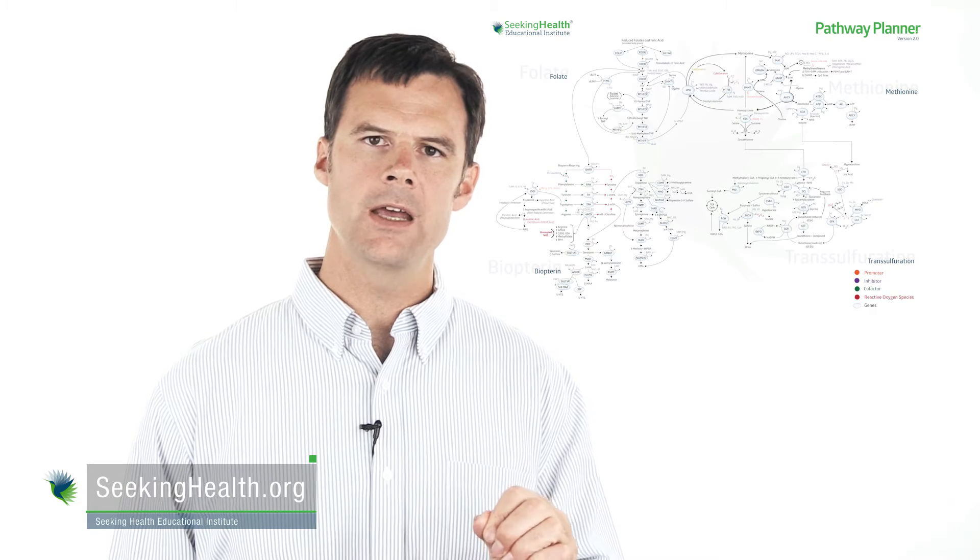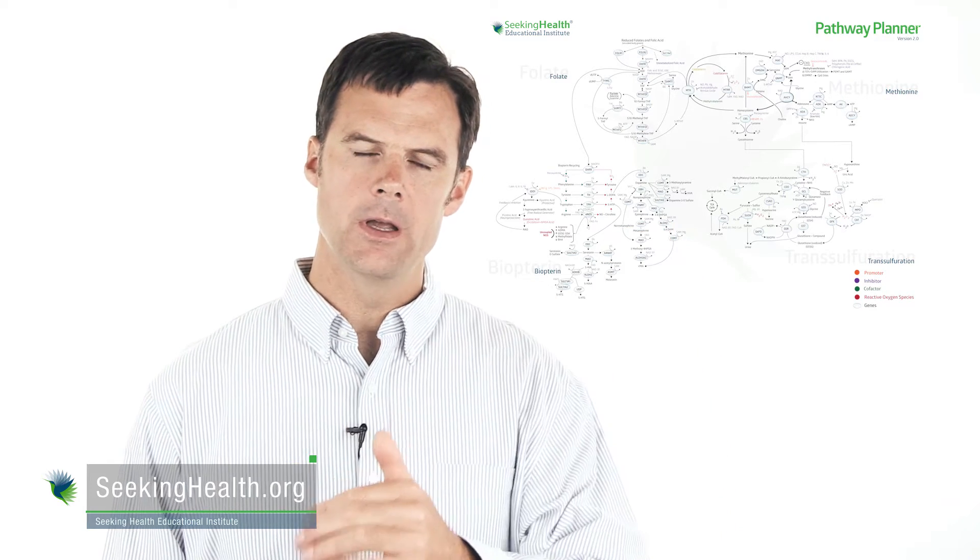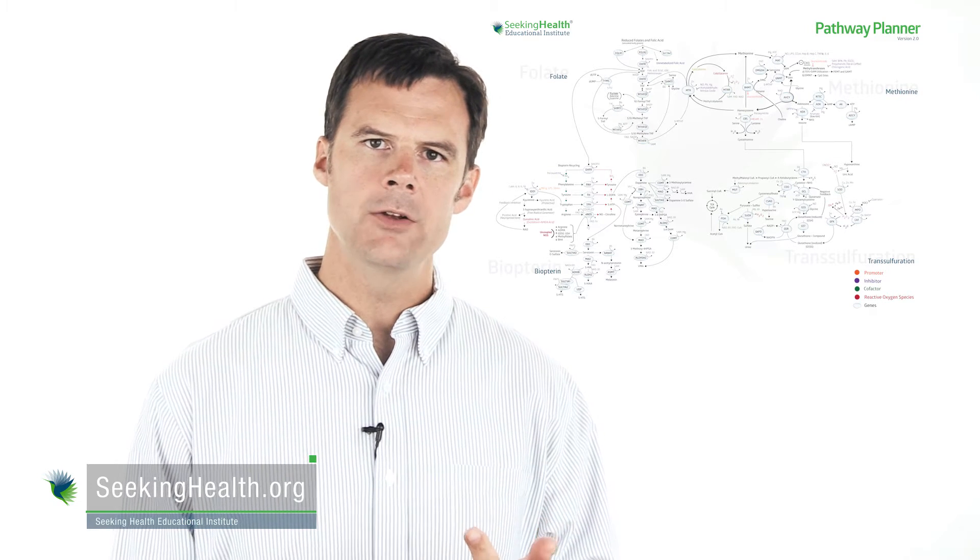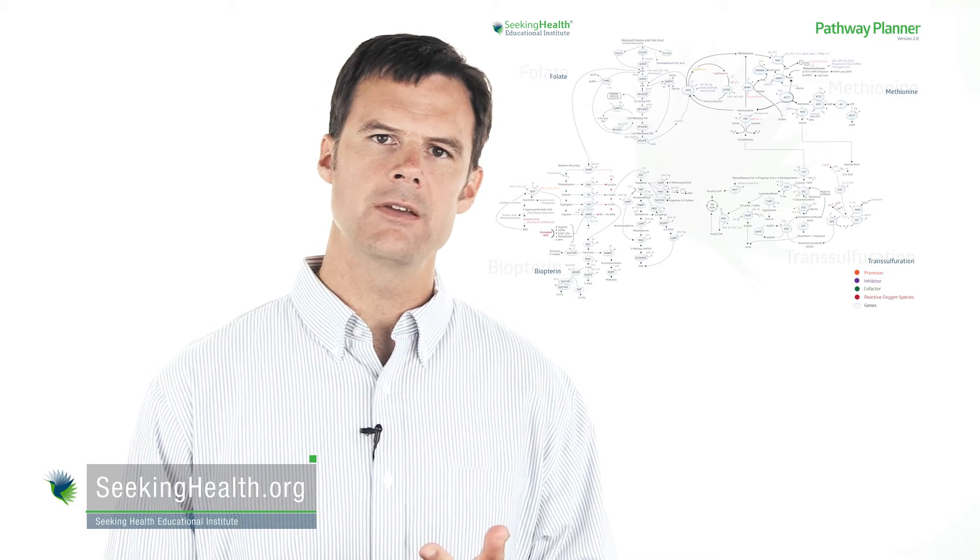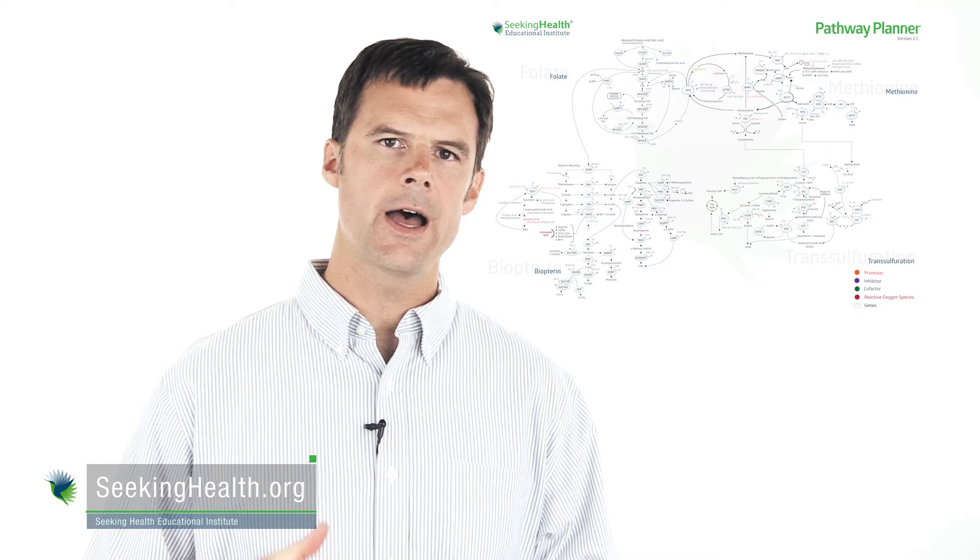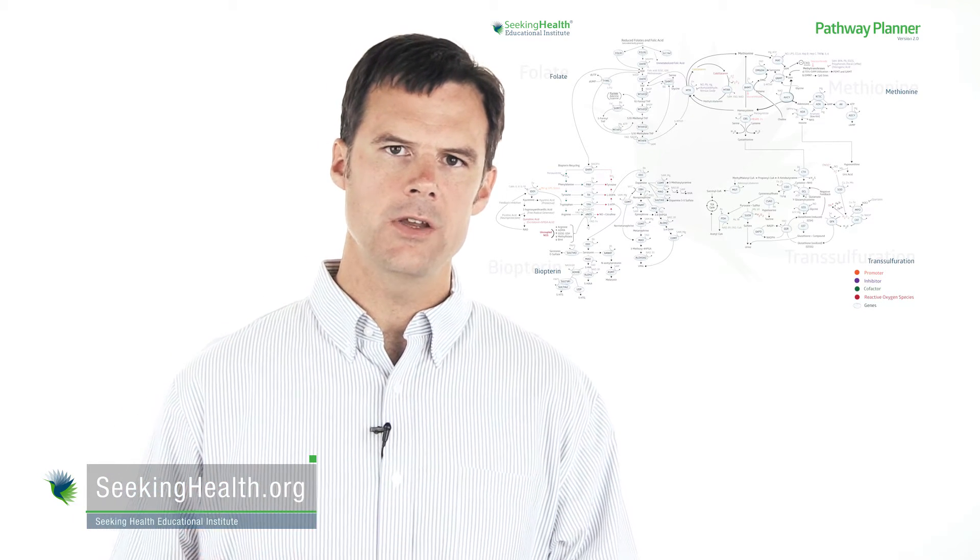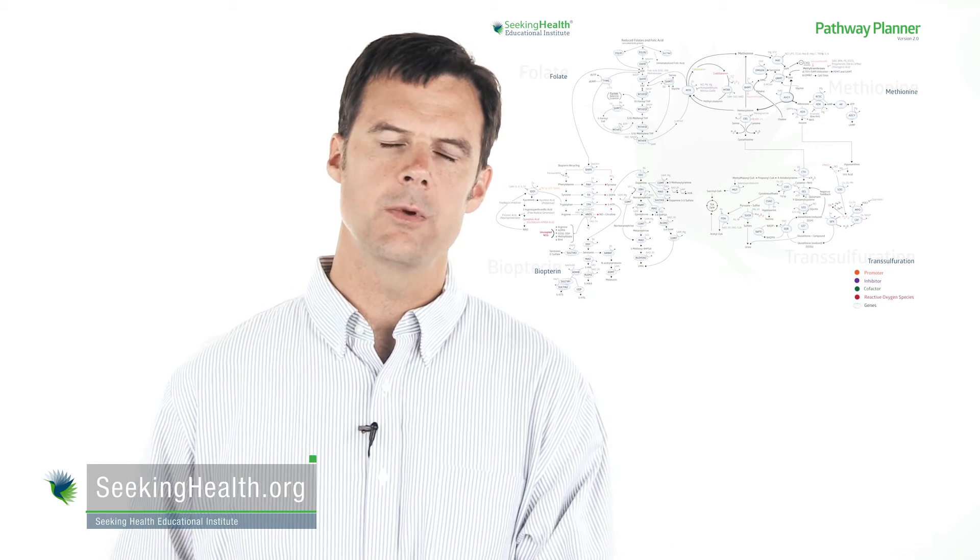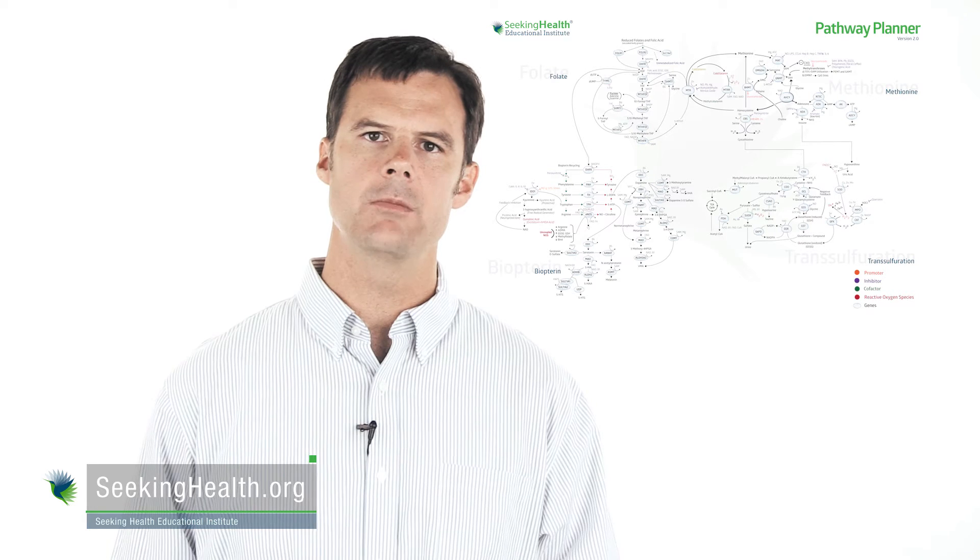What you need to understand is glutamate goes to GABA, and glutamate converts to GABA with vitamin B6, magnesium, and there's other pathways involved to break down glutamate, which is niacin. Also, high homocysteine can increase glutamate toxicity as well, so lowering your homocysteine with various nutrients such as methylfolate and methylcobalamin.